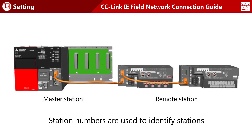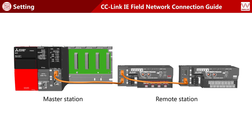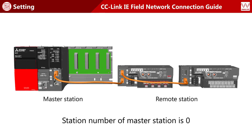Just as individual telephones are assigned telephone numbers for identification, station numbers are used to identify stations. The system shown here is configured with three stations. The station number of the master station is fixed to zero.